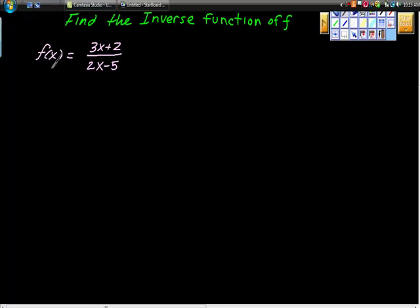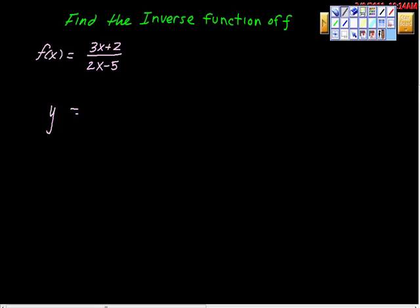The process, of course, first would be replace the function notation with y notation. So here's y is equal to 3x plus 2 over 2x minus 5. This is where people do it a little bit differently. There are two strategies here. One is to exchange x and y now. The way I usually do it is I solve for x and then I change them out afterwards. Either way will work. So I'm going to just solve for x.